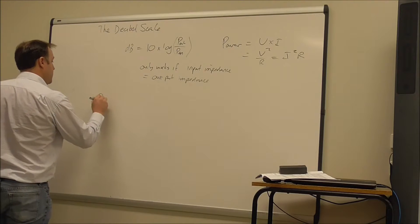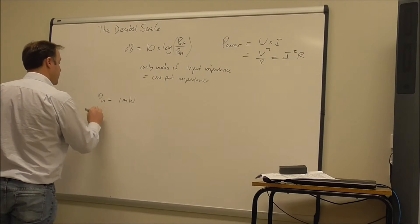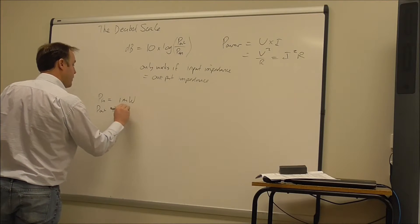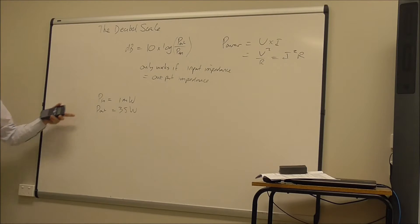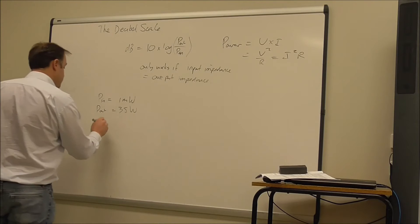So if P in is 1 milliwatt and P out equals let's say 35 watts. So this is going to be a rather large gain. So we're actually 35,000 times the power. Right so the output power is 35,000 times bigger than the input power. So if I use this formula to calculate the decibels it's going to be not a number as unwieldy as 35,000. It would be something a little bit more manageable. So 10 times the log of 35,000 milliwatts divided by 1 milliwatt.